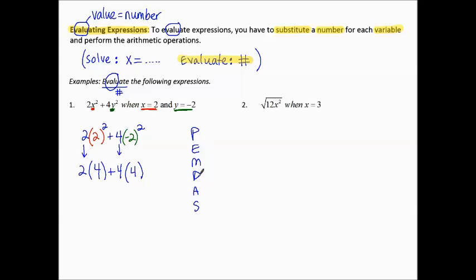Now we do multiply and divide in that order, whichever comes first. Here we have multiply. 2 times 4 is 8, plus 4 times 4 is 16. And then now we can do add and subtract. 8 plus 16 makes 24. Notice our answer is a number, just a number. 24 is the value when we plug in these values for those variables.